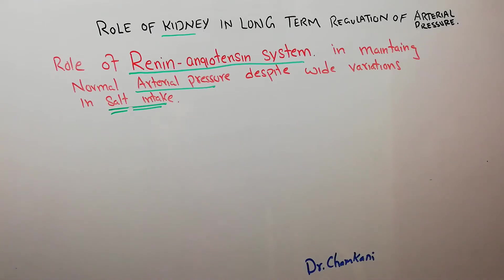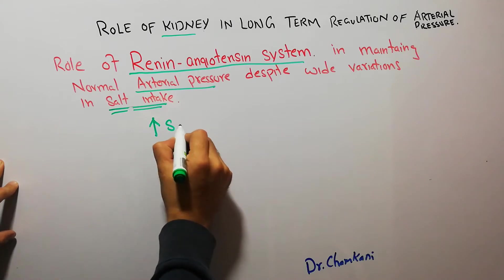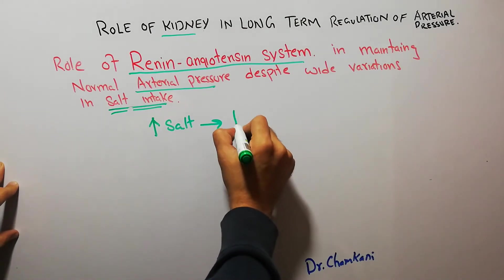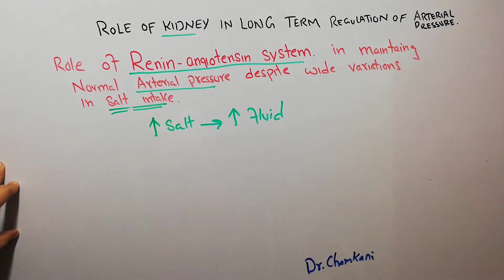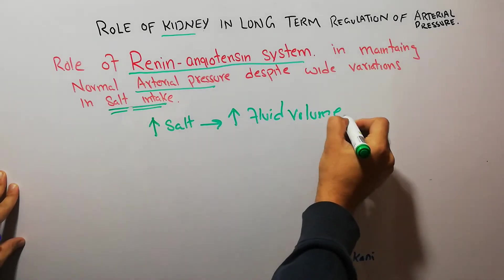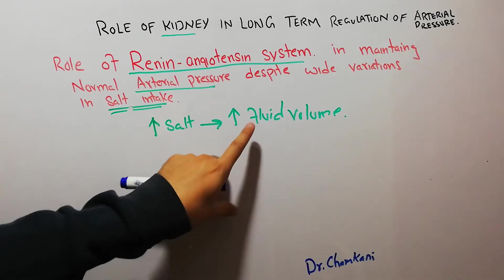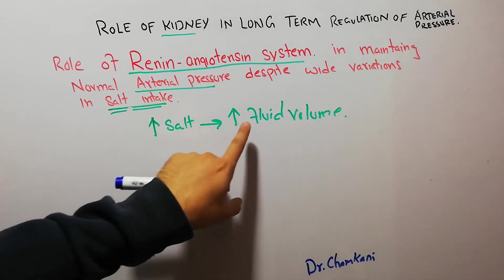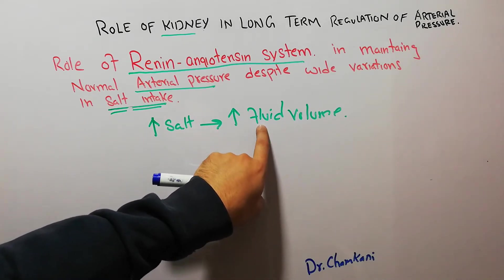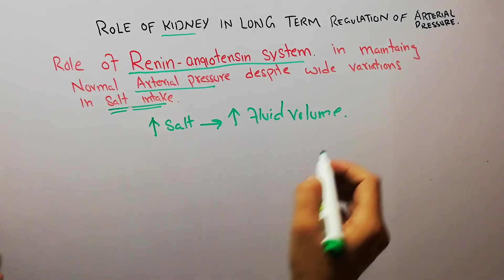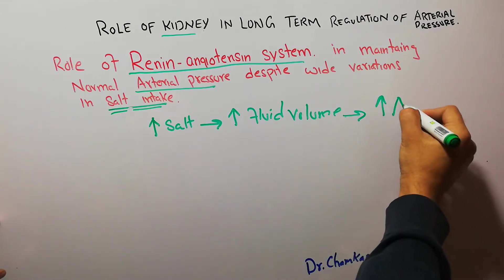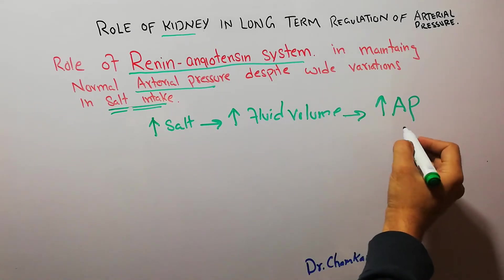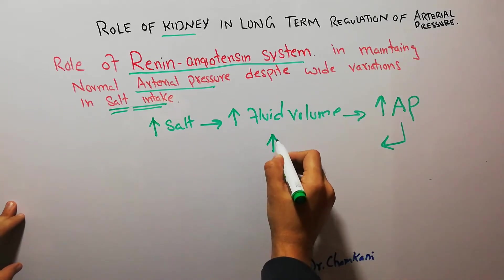For example, if a person increases the intake of salt, this increase in salt intake will lead to increased fluid volume in the body, because salt retains water and fluid. So increased salt intake leads to increased extracellular fluid volume, and increased extracellular fluid volume leads to increased arterial pressure. The arterial pressure increases due to increased salt intake, which in turn leads to increased blood flow through the kidney.